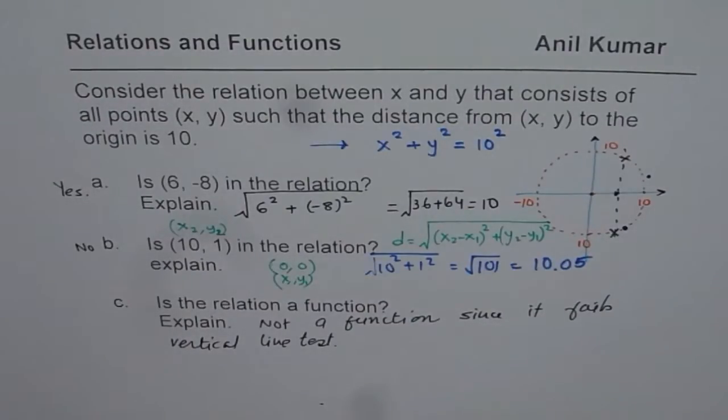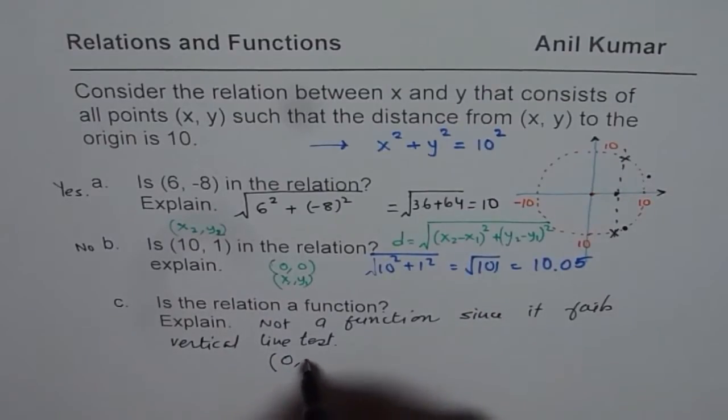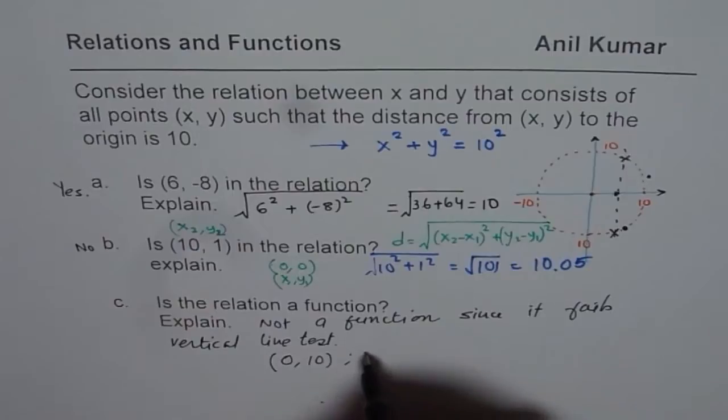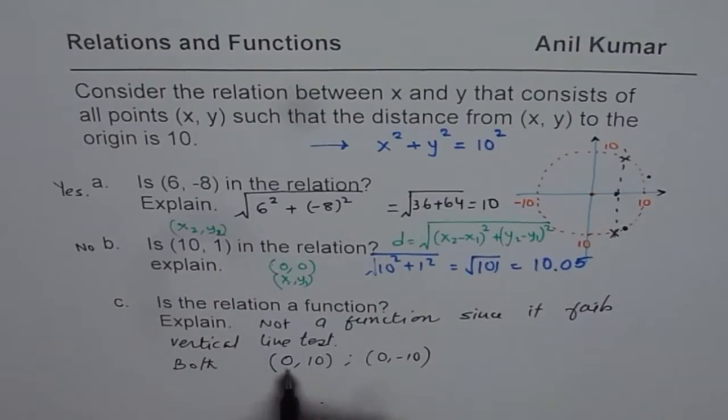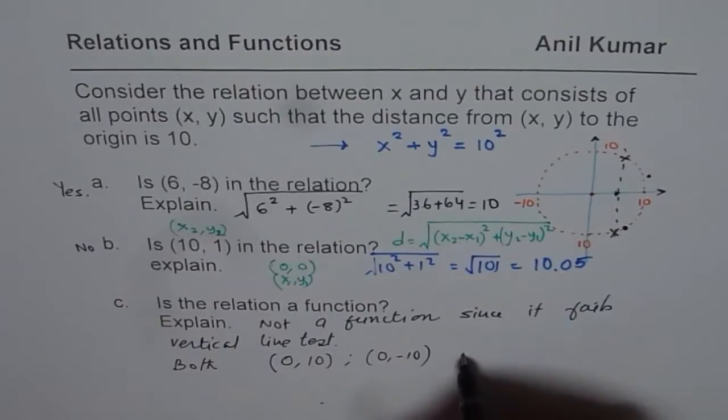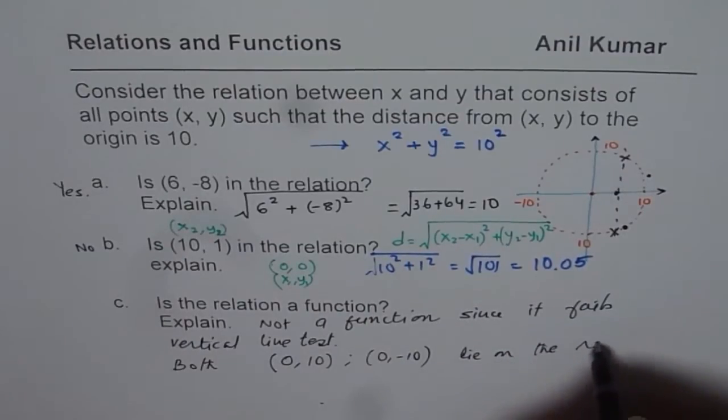Even one single example can work for you. For example, the point, if you consider x value as 0 and y value of 10, and then 0 and -10. As you can see, both (0, 10) and (0, -10) lie on the relation.